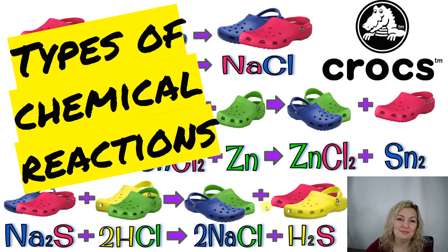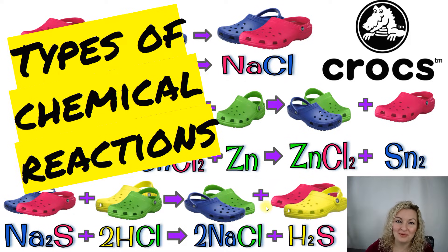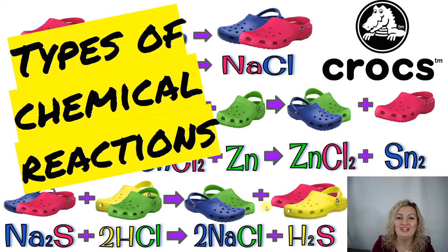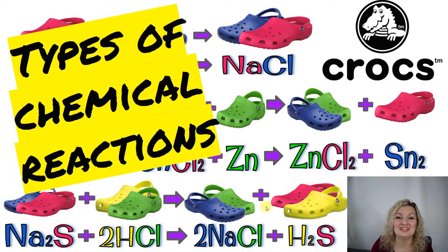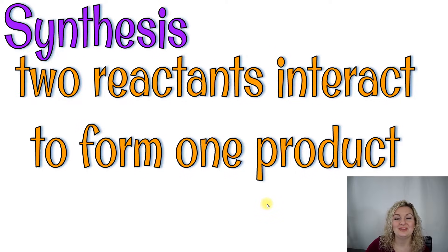This is Bo Deshawn here. Today we're going to be learning all about the types of chemical reactions. I'm going to show you this with crocs and all these bright vibrant colors that people are wearing, and they're swapping shoes so they have two different colors on at the same time. It's going to make it really easy to learn our types of reactions, so let's get into it.